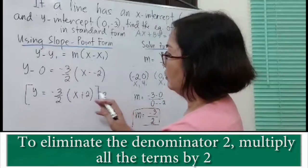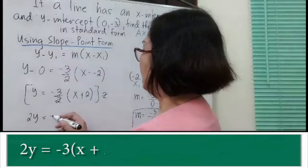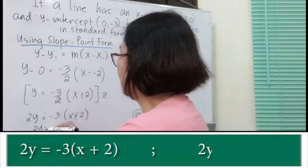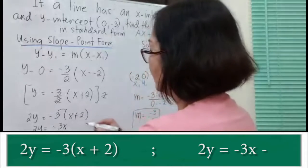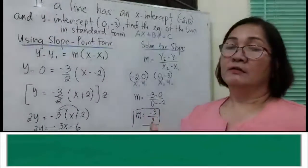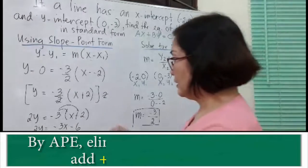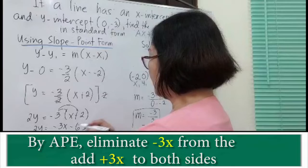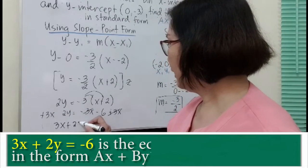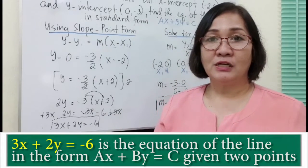Multiplying all terms by 2: 2 times y is 2y, and negative 3 halves times 2, the 2s cancel, giving negative 3 times x, plus 2. Simplifying: 2y equals distribute negative 3, giving negative 3x and negative 3 times 2 which is negative 6. To write in standard form, use the addition property of equality to add 3x to both sides. So 3x plus 2y is equal to negative 6, which is the equation of the line using two points.